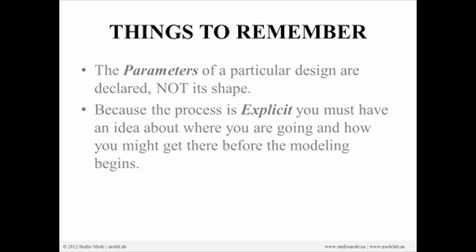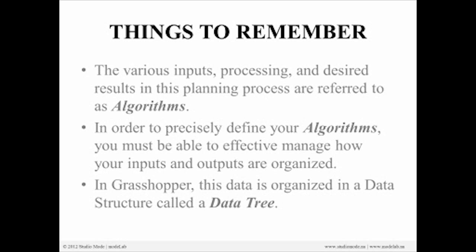Some things to remember: the parameters of a particular design are declared, not its shape. We're going to be modeling relationships and the values that define those relationships. Because the process of developing a parametric model is explicit, you have to have an idea of where you're going before you start. The various inputs, processing, and desired results are referred to as algorithms. In order to precisely define and control those algorithms, you have to effectively manage inputs and outputs and how they're organized. In Grasshopper, that data organization is done through a data structure called a data tree.